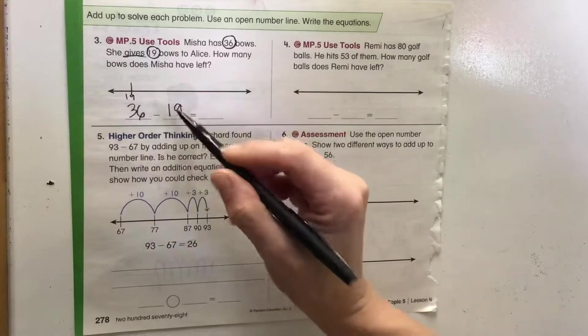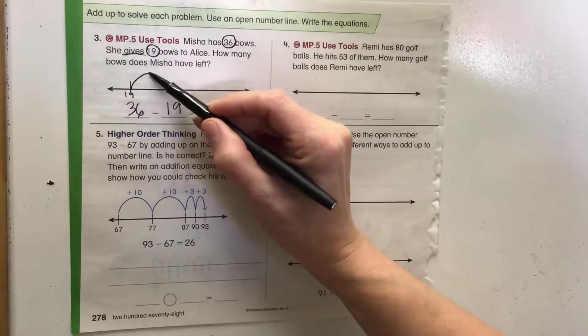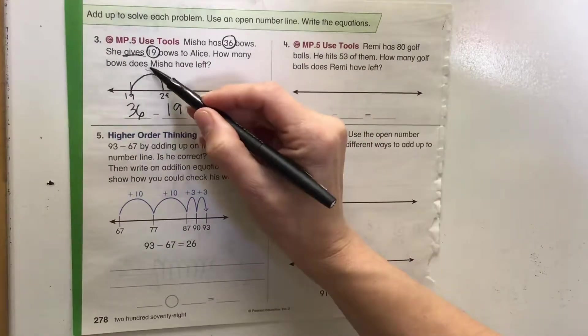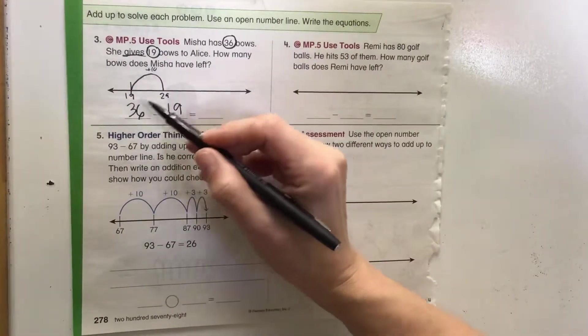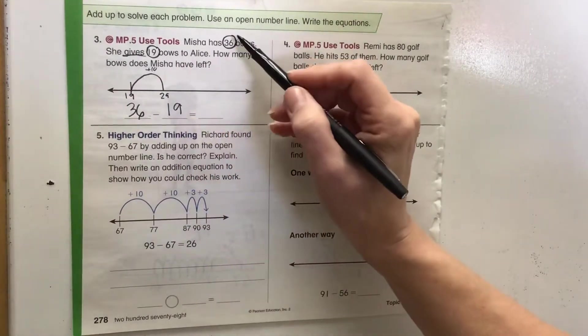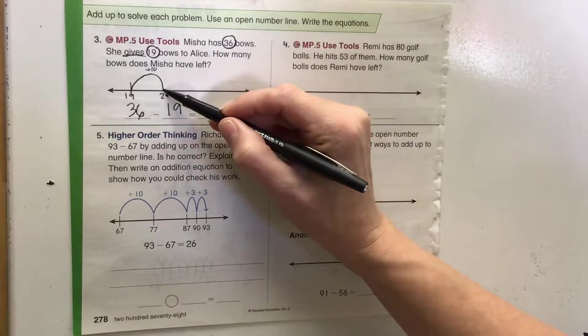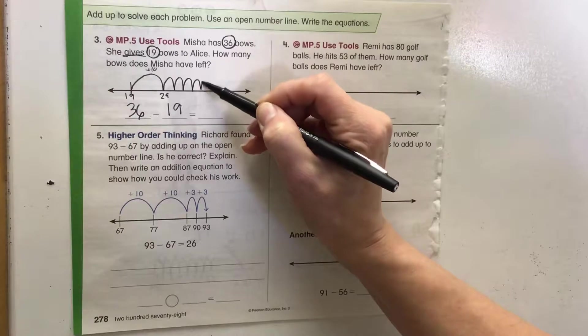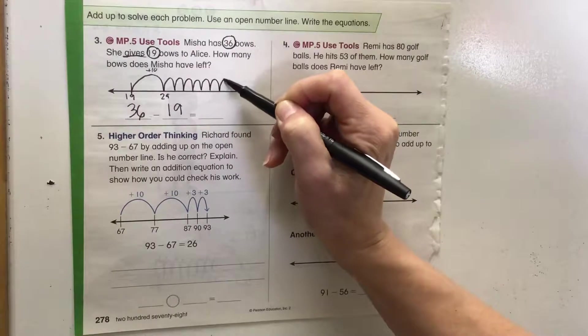Let's just try that strategy first. 19 plus 10 is 29, plus 10 more would be 39, that would be too high. So we've got 29, we need to get to 36. 29, 30, 31, 32, 33, 34, 35, 36.